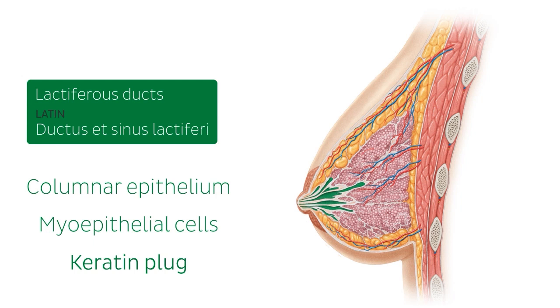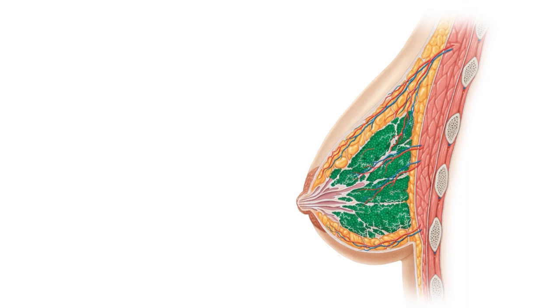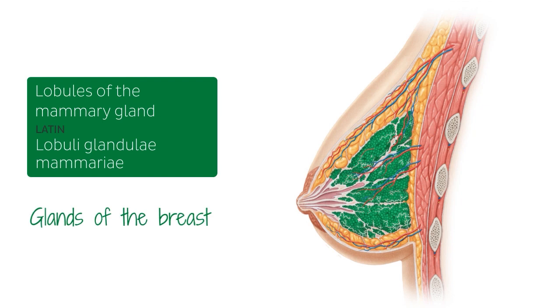At the end of the lactiferous ducts we can see clusters of alveoli known as lobules. These lobules are considered exocrine glands of the breast and they are the site of milk production and excretion in the breast.